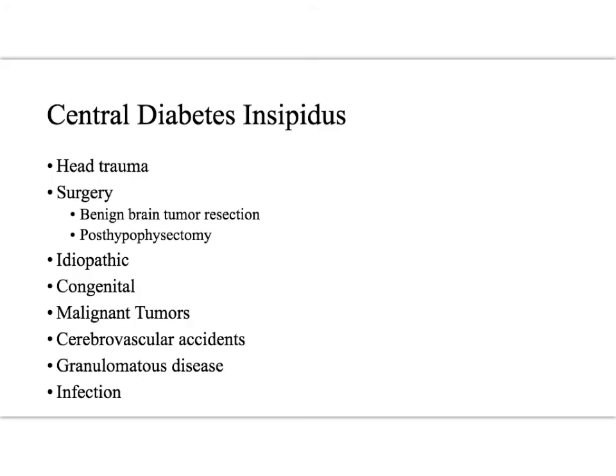There are several different causes of central diabetes insipidus. There is the congenital form — both autosomal dominant and autosomal recessive — but commonly we see this with head trauma and brain surgery. With surgeries, it can be due to benign brain tumors, or malignant tumors themselves can actually cause central diabetes insipidus. Other causes include idiopathic, stroke or cerebrovascular accidents, granulomatous disease, or any infection of the CNS.